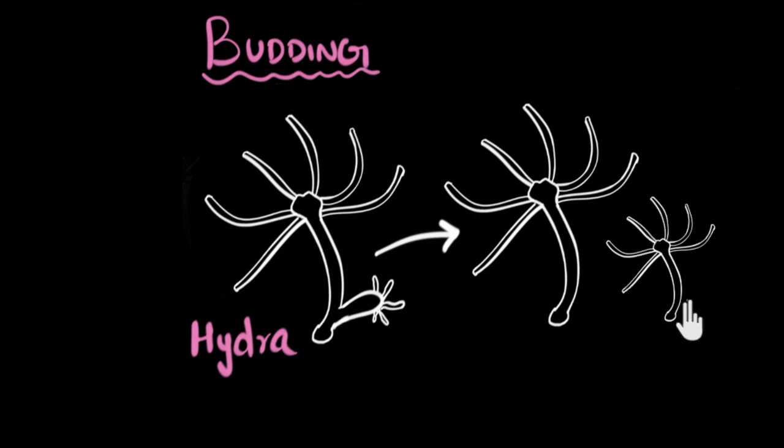Now, an important thing to note is as this baby Hydra grows, it's going to look exactly the same as its parent. Because there are no fathers or mothers here, there's no gender, we're just going to call it the parent. So the offspring is going to look exactly like the parent. Why is that? Because this is asexual reproduction, there is no DNA mixing like in sexual reproduction. Since the DNA is going to be exactly the same, this will be identical to this. In asexual reproduction, the offsprings look like clones of their parents.